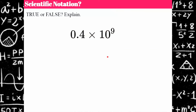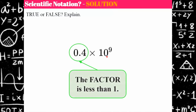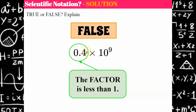Try this one. Welcome back. Hopefully you picked false, because the factor is less than one. We do not have a significant digit to the left of the decimal point — we have zero there, and that's not significant. Although we have a power with an integer exponent, our factor disqualifies it from being scientific notation.